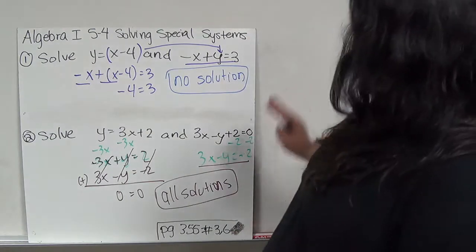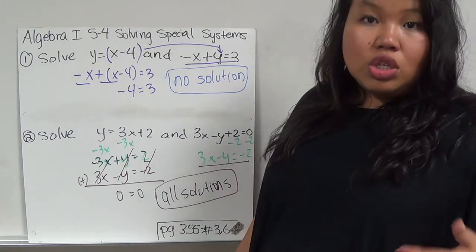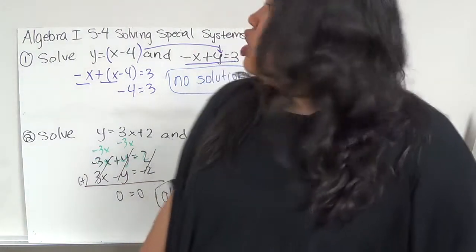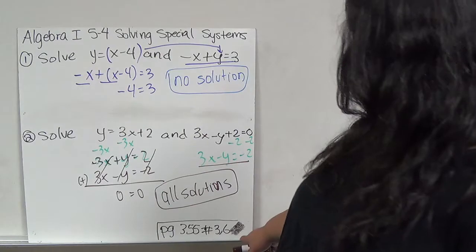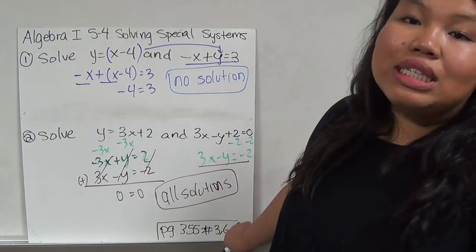So besides the no solution and all solutions, you're just going to be dealing with elimination, substitution, choosing which one, or just doing elimination all over again like last section. So it shouldn't be too difficult. Try page 355, numbers 3 and 6, and I will see you in class.